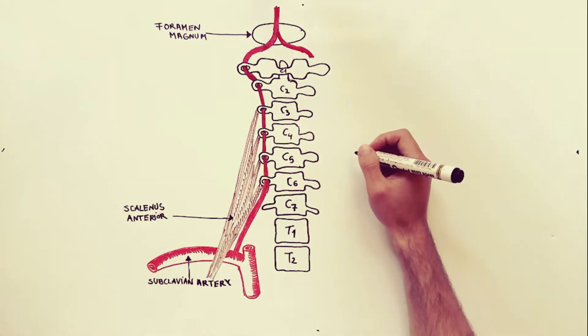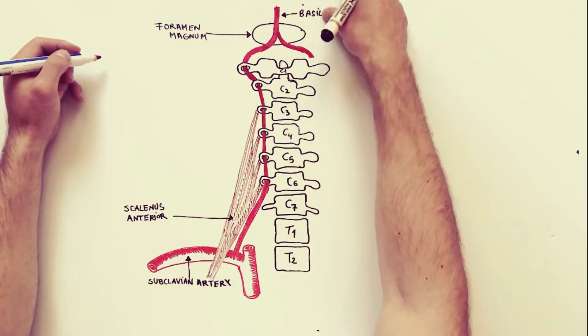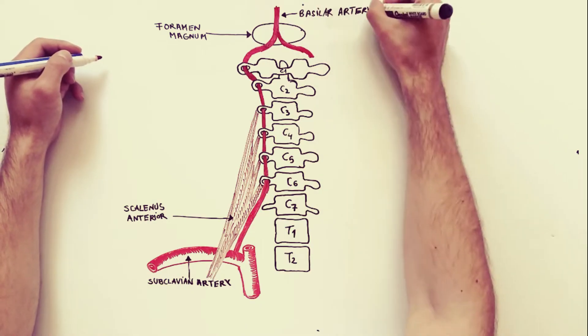In the cranial cavity, it unites with the vertebral artery of the opposite side at the lower border of the pons to form the basilar artery.